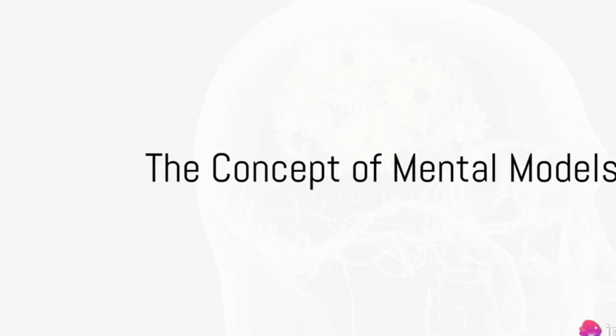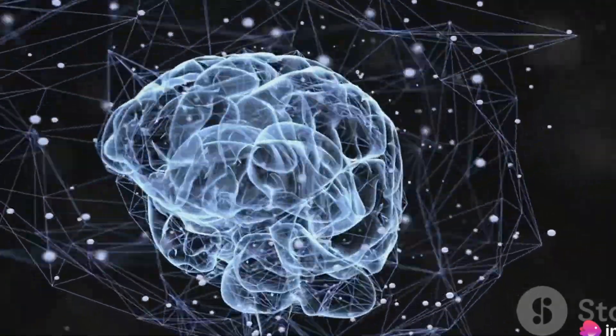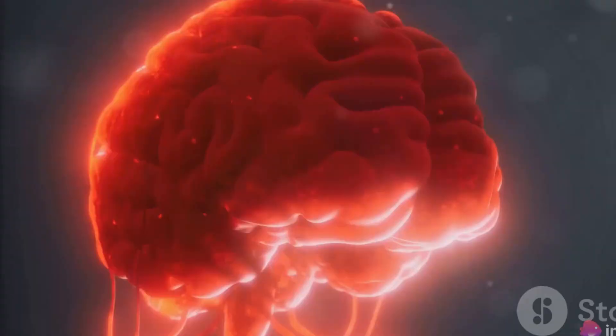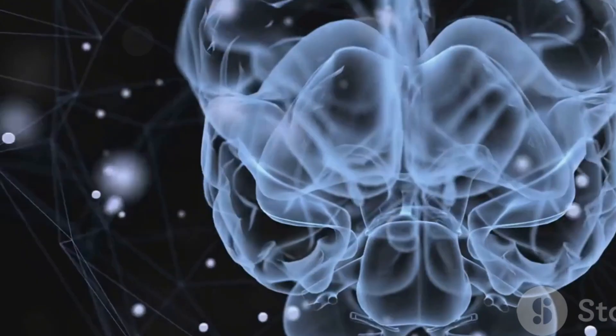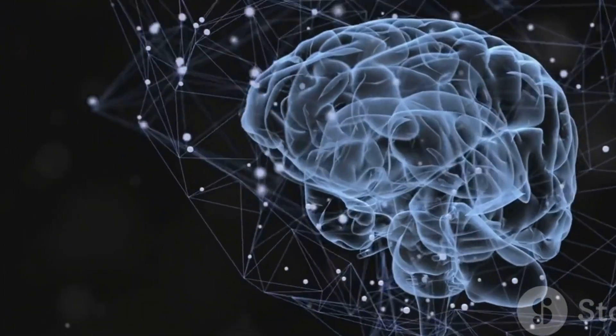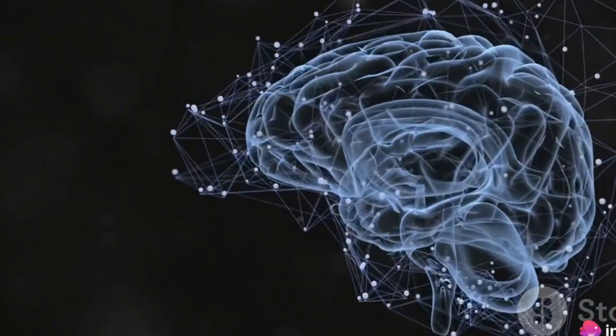This is where the concept of a mental model comes into play. In psychology, a mental model refers to the knowledge and cognitive processes that allow us to understand, predict, and reason about the behavior of complex physical systems.